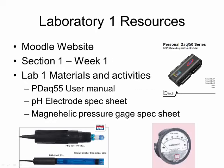There is a lab handout that accompanies this presentation. The PDAC-55 user manual and spec sheets for Magnehelic differential pressure gauges and pH electrodes will be on the Moodle website and available for use during the lab. These materials will be in Section 1 of the course Moodle website under Laboratory 1, Materials and Activities. You may want to pause the video and open up the PDAC-55 user manual to Section 2, since I will be referring to it later.